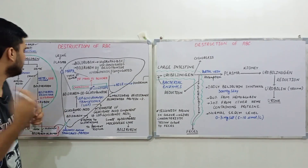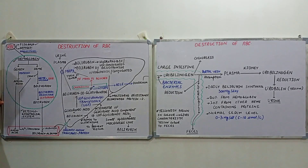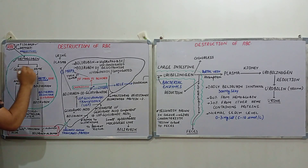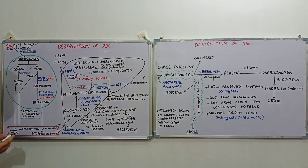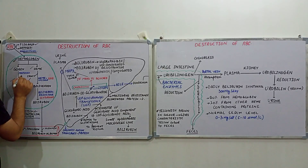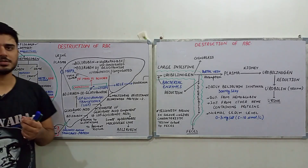The old RBCs are engulfed and broken down into their component parts. Since most cellular components are absent within RBCs, they mostly contain hemoglobin, which is released. This hemoglobin is broken down into two parts: one is globin and the other is heme. Globin is a protein or polypeptide chain, and it will be broken down into amino acids by various proteases.